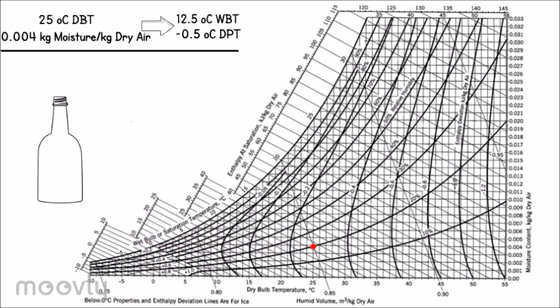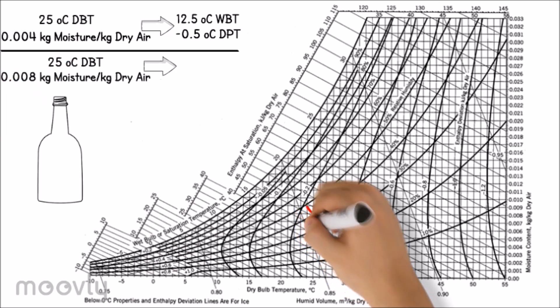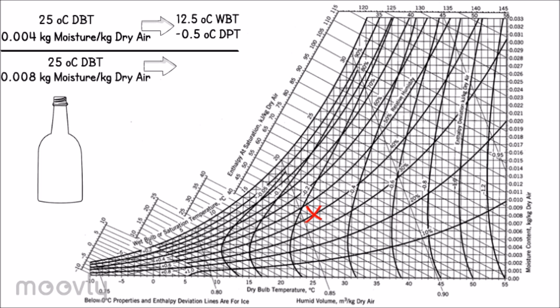Now, let's take a look on another air water system with same dry bulb temperature but higher moisture content. By referring to the chart, we know that wet bulb temperature of the second system is 16.2 degrees Celsius.